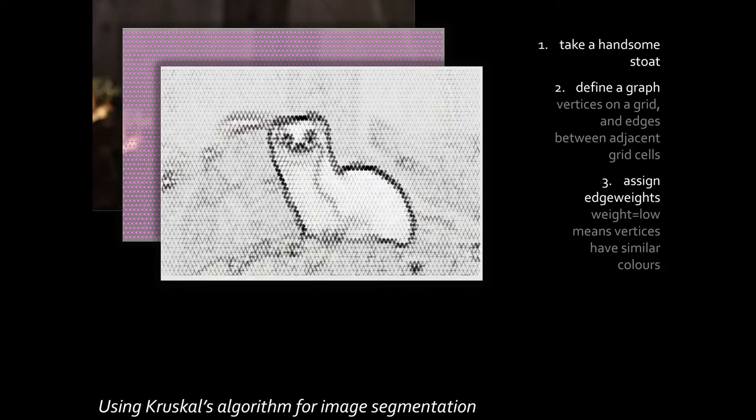And then we define edge weights. For each of the edges on the grid, I'm defining the edge weight to measure how similar the pixels are. If the pixels at two vertices are very similar, same color and so on, I'll make the edge have a very low weight.